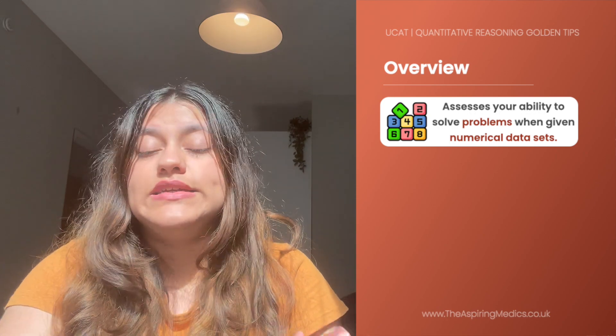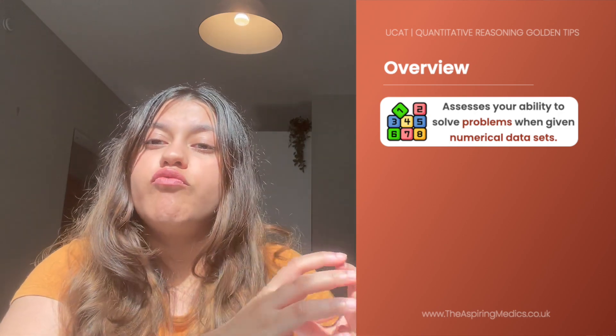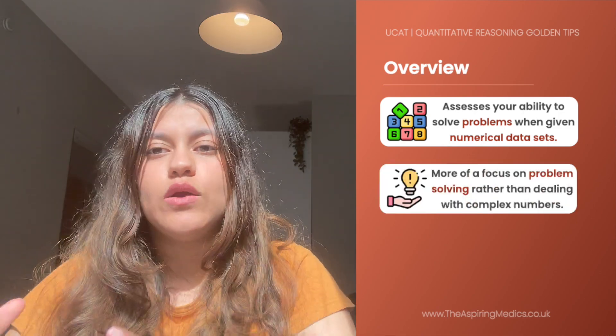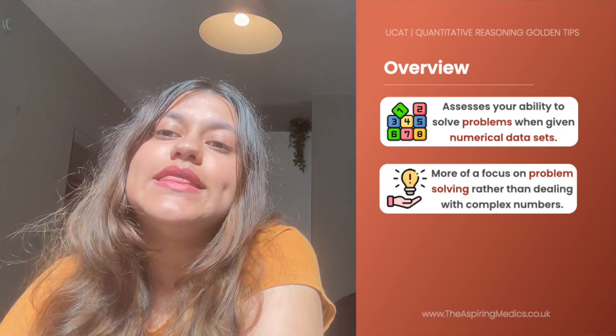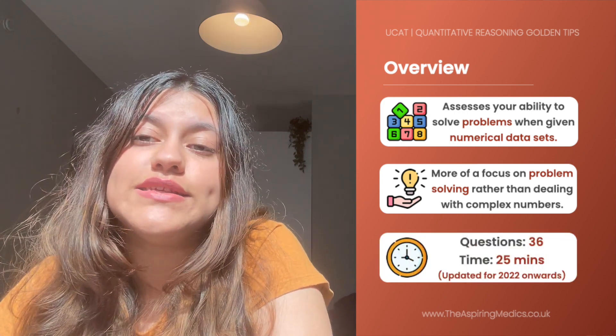The quantitative reasoning section assesses your ability to solve problems when you're given numerical data sets. However, since you're given a calculator in the UCAT exam, it focuses more on your ability to solve problems rather than to deal with numbers. In this section, you're presented with 36 questions and you have 25 minutes to complete them. In today's video, we're going to be presenting you with eight top tips to help you ace the quantitative reasoning section. So without further ado, let's get to our first tip.